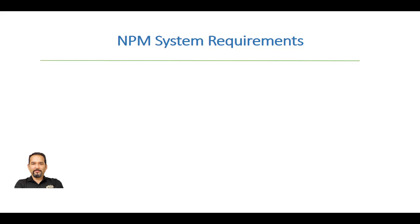In today's lesson we're going to talk about system requirements. These system requirements define the minimum requirements for all products on Orion Platform 2019.4. Products may have different requirements such as OS or memory and may differ per license level.